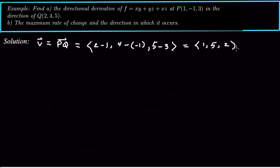So that is the direction we want to take the directional derivative at the point (1, -1, 3). However, we can't just take the directional derivative in the direction of any vector — it has to be a unit vector. So we need to normalize this. The unit vector u will be v divided by its magnitude.